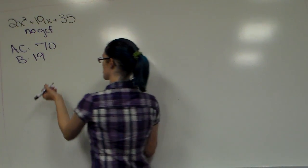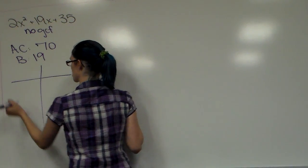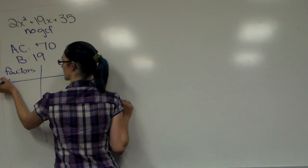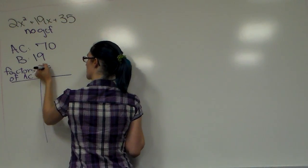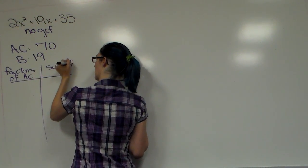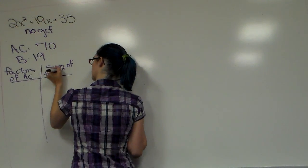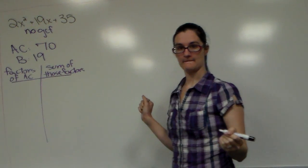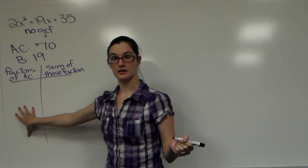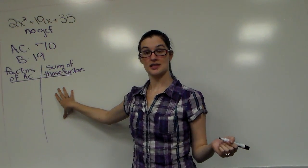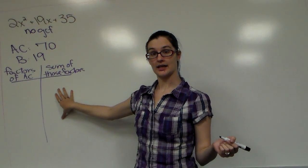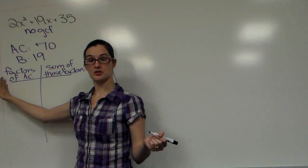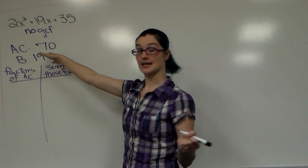Then we're going to create a chart. In this chart you want factors of AC and you want the sum of those factors. We want the factors of 70, and then we want to add those numbers together, and your sum should be B. So when we do our factors, you want them to add to 19.